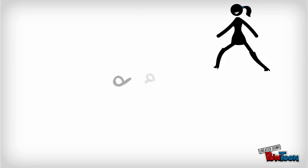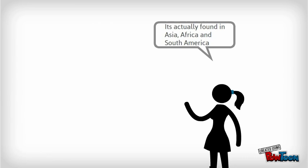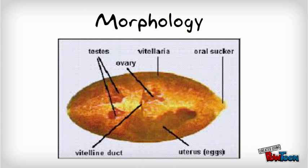Paragonimus westermani: starting with epidemiology, it is found in Asia, Africa, and South America. Morphology: it is a plump, reddish-brown ovoid worm measuring 10 by 4 millimeters.